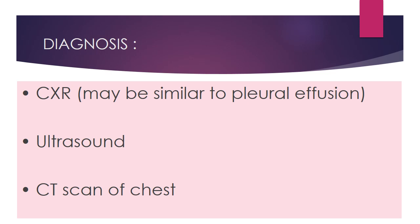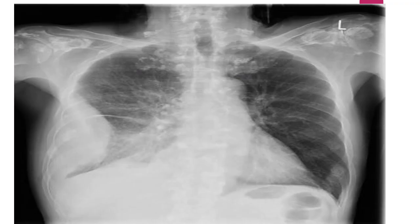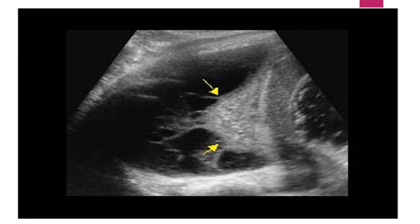Chest X-ray will show a meniscus sign and there will be a diminished costophrenic angle. This is a picture of a chest X-ray, and you can see right-sided empyema in it.